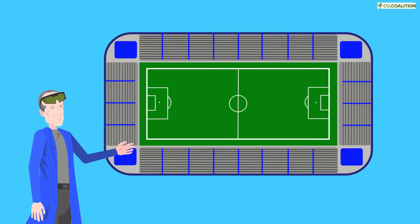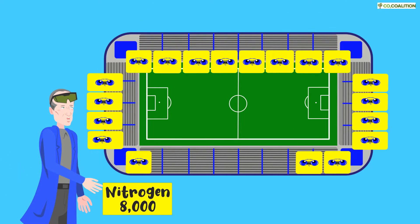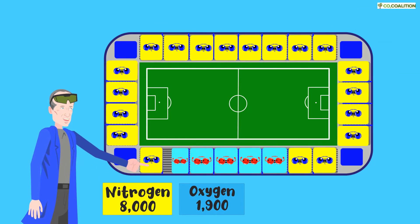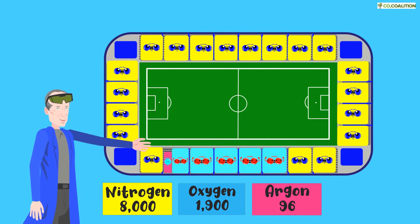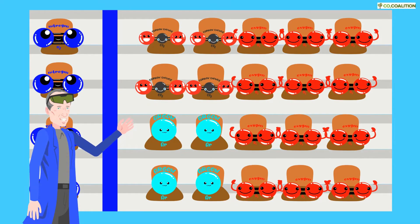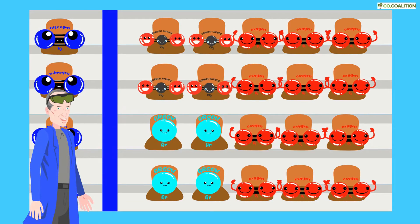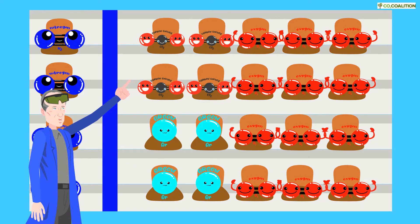Picture a football stadium that seats 10,000 people. Next we'll let air molecules fill the seats. Abundant nitrogen fills much of the stadium at 8,000 seats. Oxygen comes next at around 1,900 seats. Argon takes only 96 seats. That leaves just 4 seats for carbon dioxide. This represents how much carbon dioxide is in the air today compared to the other gases — just 4 molecules out of 10,000.